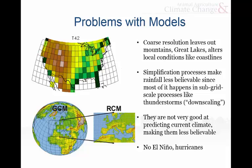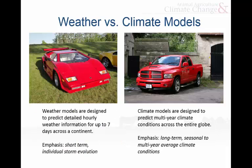Some of the other problems with the models is they're not always very good at predicting the current climate. If you can't even get the current climate right, that's a concern, because you'd like them to be relatively realistic. A lot of times they also don't have things like El Niño — the interannual variability is not well captured — or things like hurricanes, because hurricanes are relatively small scale. In certain parts of the country, those are the primary drivers of climate, and so you really have to take the predictions with a bigger grain of salt.